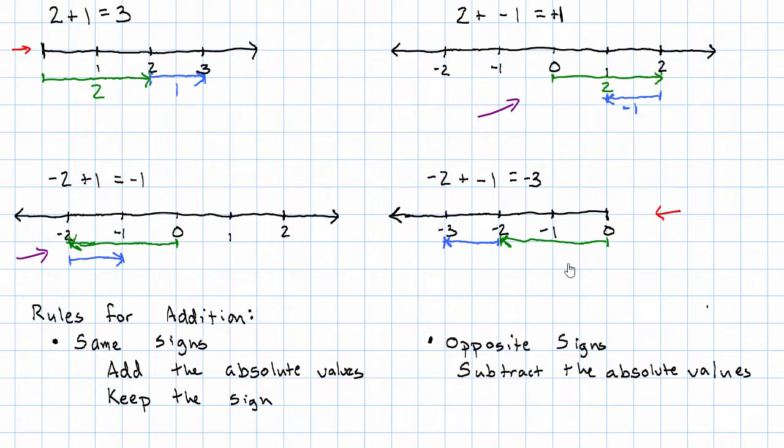So in both of the opposite signs examples we did, we subtracted 2 minus 1. And then, what's the sign of the result? Well, we ended up with the sign of the number that had the larger absolute value. Think about it as keeping the larger sign, but realize we mean larger in terms of larger absolute value.